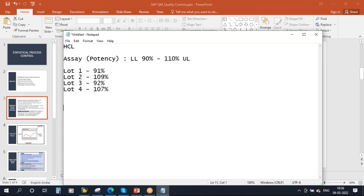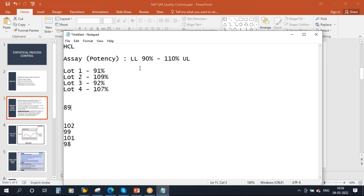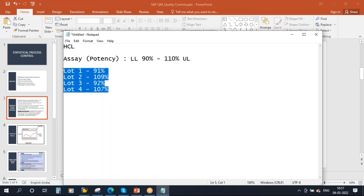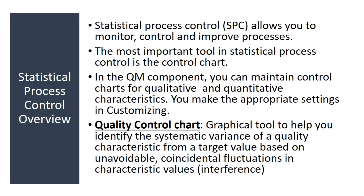Suppose if you are getting the result consistently as 102%, 99%, 101%, 98% — that is more or less consistent. But here it is very extreme: sometimes you are getting 91, sometimes 109. The deviation is more. So if you don't take any action or inform the vendor, after certain time the quality of the material may fail — the result may become 89, meaning it will fail. To avoid these situations, they use the statistical process control functionality. They take all these results and analyze the result pattern. The most important tool in statistical process control is the control chart.